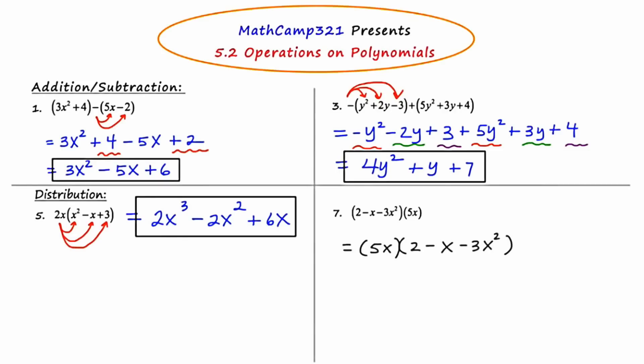I'm going to distribute the 5x into the polynomial, using arrows to remind me to multiply the monomial by each term. 5x times 2 would be 10x, 5x times negative x would be negative 5x squared, and 5x times negative 3x squared would be negative 15x cubed. Each term is one of a kind, but it's not in descending exponential order, so I'll rearrange it: negative 15x cubed minus 5x squared plus 10x.